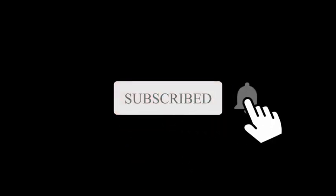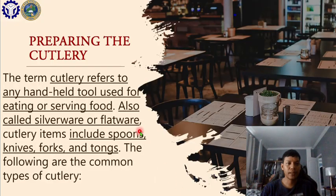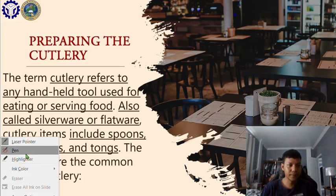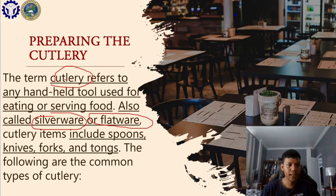In the class we are now on topic number four and we will continue to discuss about preparing the cutlery. I believe that you are already familiar with this term. The term cutlery refers to any handheld tool used for eating or serving food, also called silverware or flatware. Some establishments use flatware, others use silverware — they all refer to the same thing.